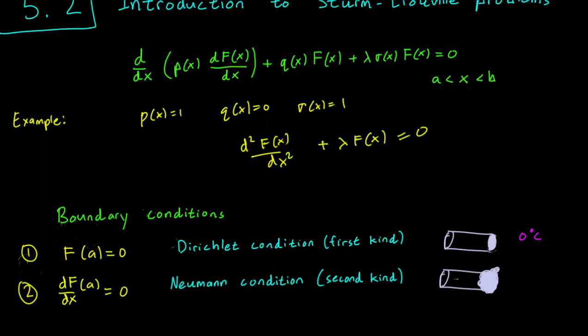We also have the Neumann condition, also known as a boundary condition of the second kind. This is when we set the derivative of the function at the boundary to be zero. We have seen this before in the context of the one-dimensional heat equation. It is when we have a rod but one side of it is perfectly insulated. As you can see, my very well-drawn cotton wool on the side of a pipe over here.